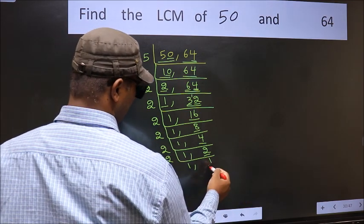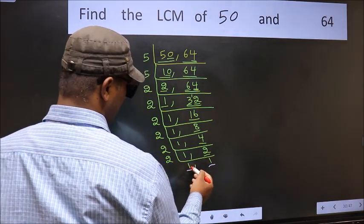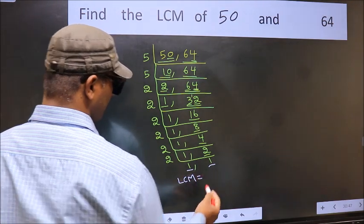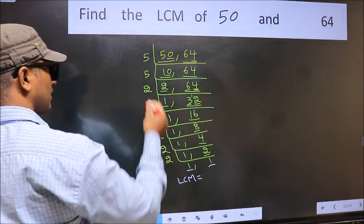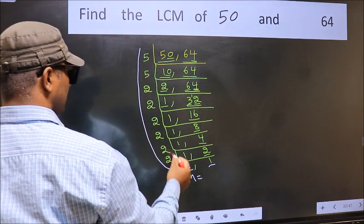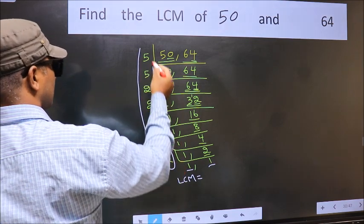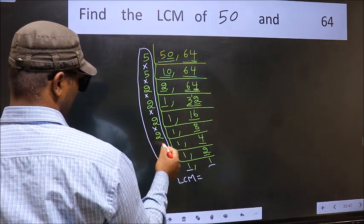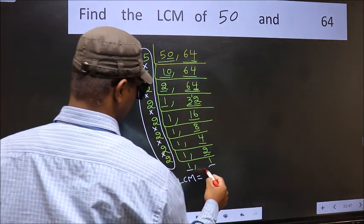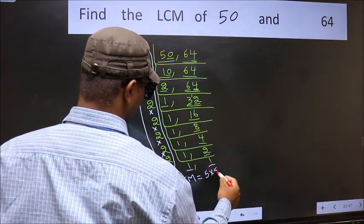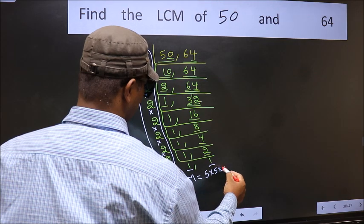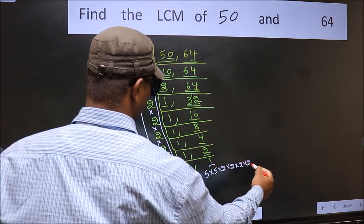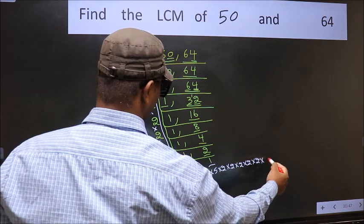So we got 1 in both places, so our LCM is the product of these numbers: that is 5 into 5 into 2 into 2 into 2 into 2 into 2 into 2.